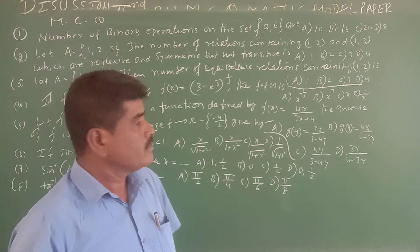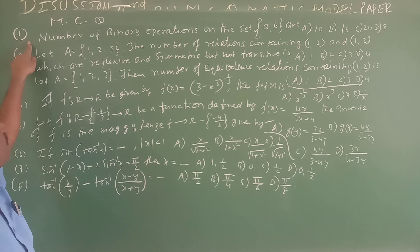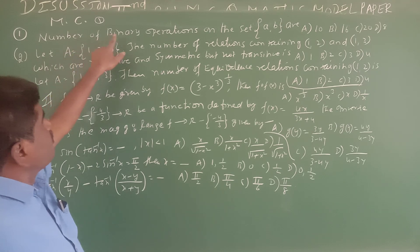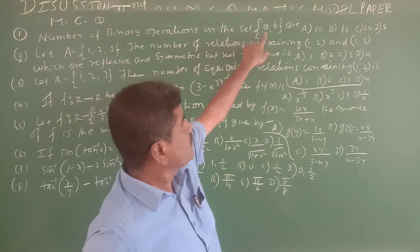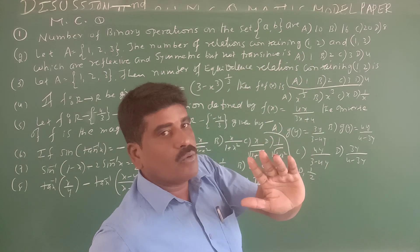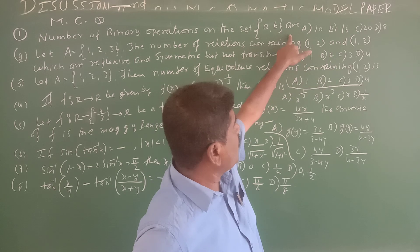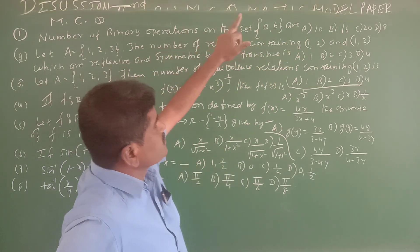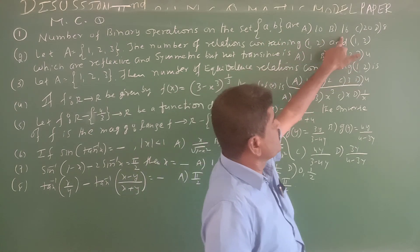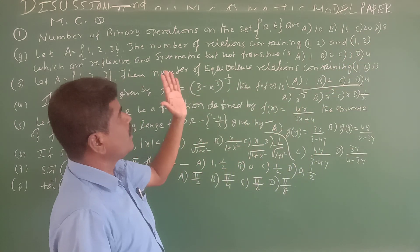Hello friends, very important MCQ questions for mathematics. First one: find the number of binary operations on the set {a, b}. The options are: Option A: 10, Option B: 16, Option C: 20, Option D: 8.